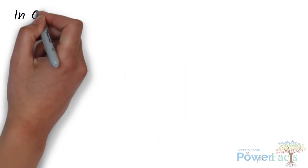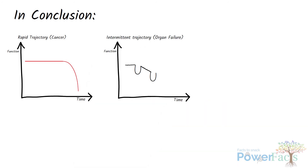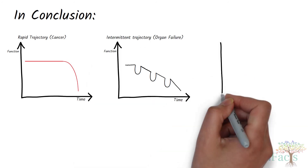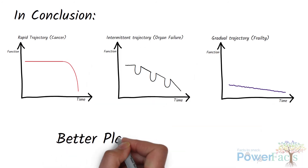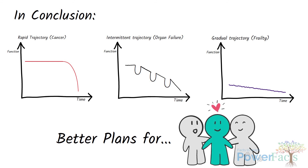In conclusion, by understanding these three common trajectories of diseases, you can better plan for the care needs of patients and their families.